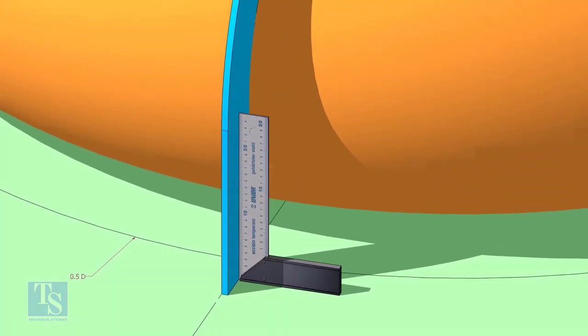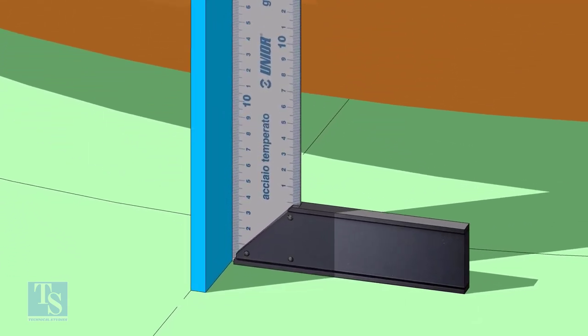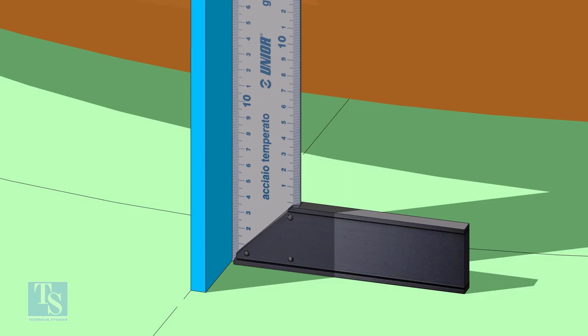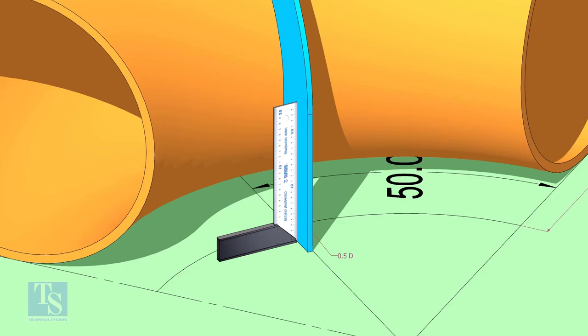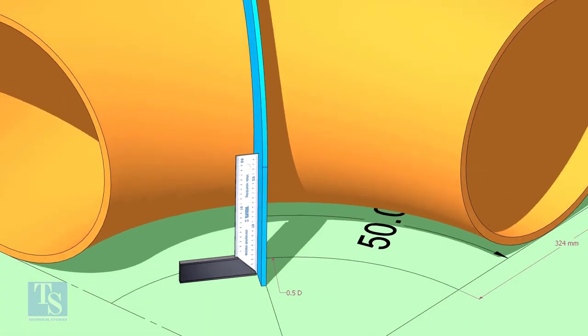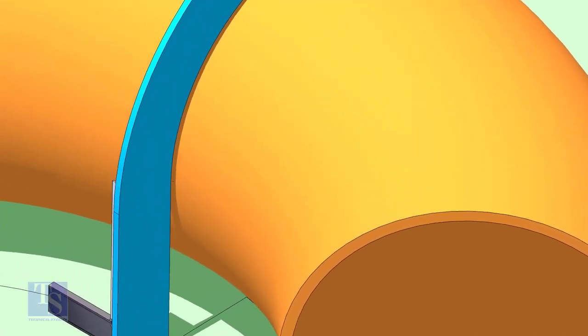Make the squareness. Draw a half circle line on the elbow where the plate touches the pipe.